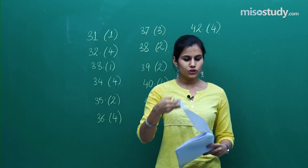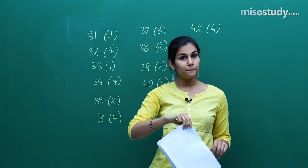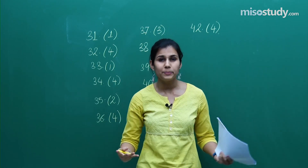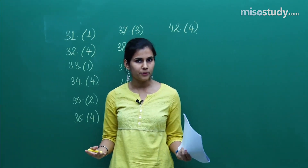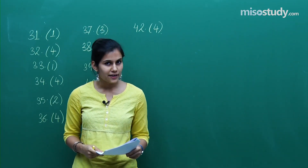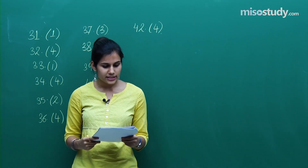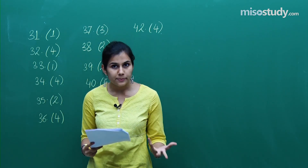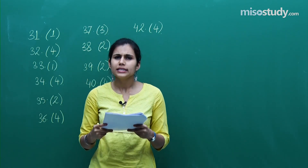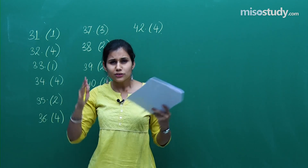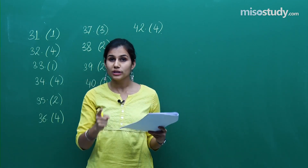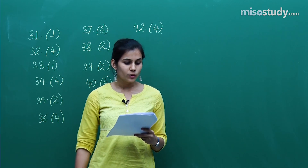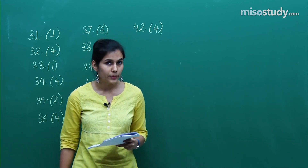Question 43 is from application of derivatives — a nice applicable part of mathematics from the 12th standard. You had to find the local minimum value of the function, which is an understandable concept. The correct answer is option number 3.